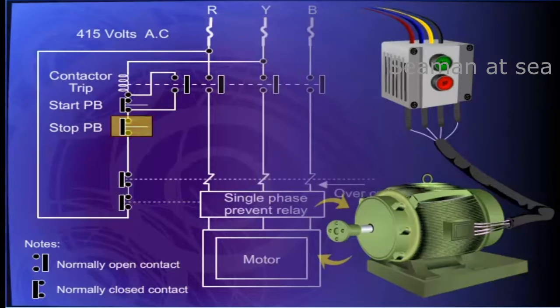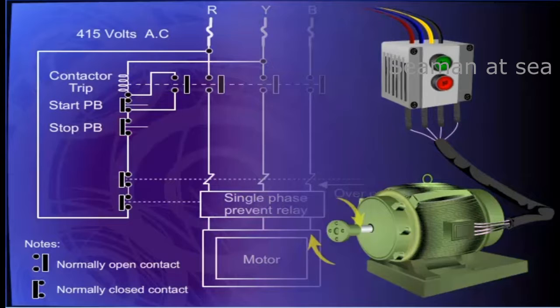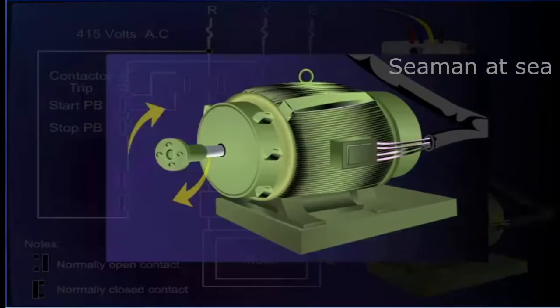The contactor drops, opening its contacts in the holding circuit of the coil. Hence the supply to the motor is disconnected and the motor comes to rest.